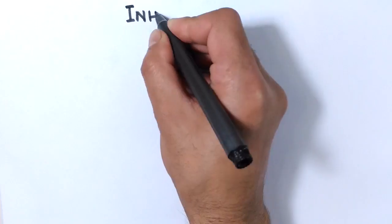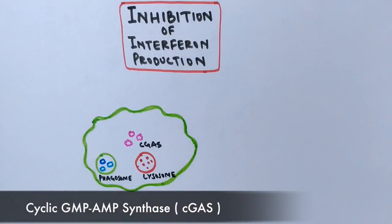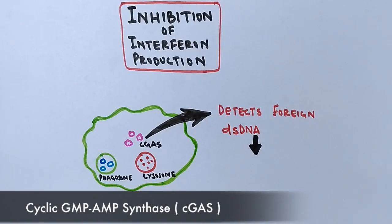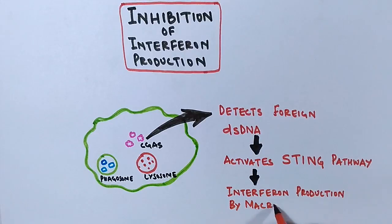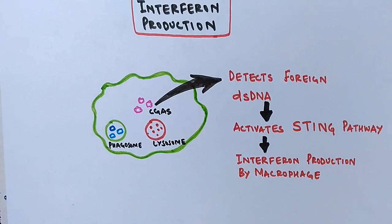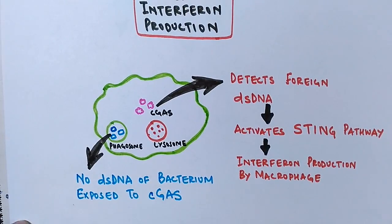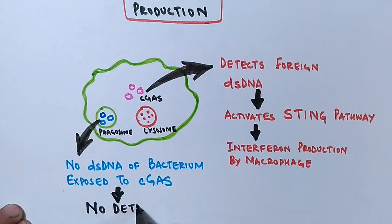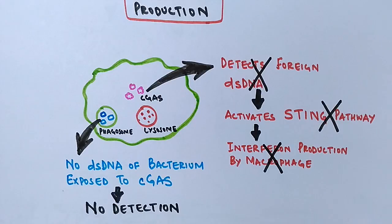Now the last one is the inhibition of interferon production. There is a cGAS molecule inside the macrophages which detects the foreign DNA and activates STING pathway. And it's this STING pathway which initiates the production of interferon in macrophage. But when there is no degradation, no lysis of foreign DNA, how come the cGAS molecule is going to detect any foreign DNA? So there will be no detection, there will be no interferon production because there will be no STING pathway. So this is how the mycobacterium tuberculosis survives inside the macrophage leading to the macrophage parasitism.